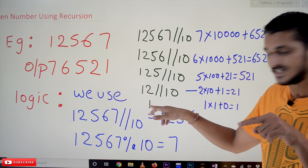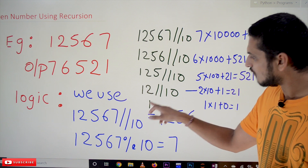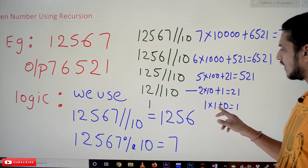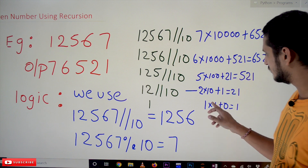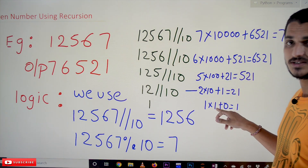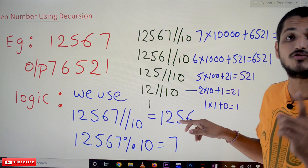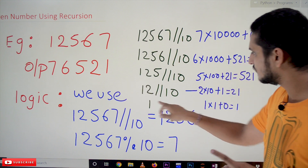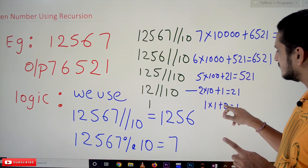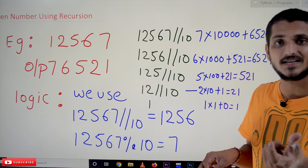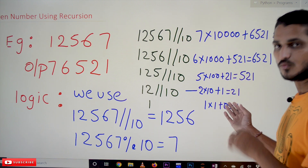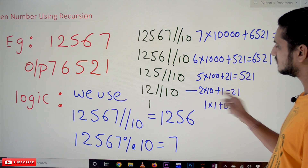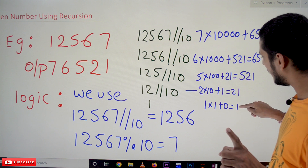After dividing down to a single digit, we have 1. So 1 mod 10 is 1. Then 1 into 1 (1's place) plus 0 equals 1. We take a variable called 'digit' initially set to 0, and we update it: 1 into 1 plus 0 equals 1. So the digit value becomes 1.